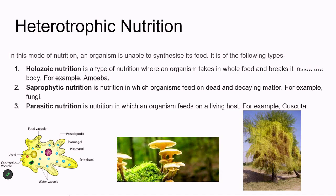Saprophytic nutrition refers to organisms which feed on dead and decaying organisms or material. For example, fungi growing on old damp logs take their nutrition from that dead and decaying matter. Parasitic nutrition is different from saprophytic — parasitic organisms feed on a living host. An example is Cuscuta (Amarbel), which lives on a living host plant.